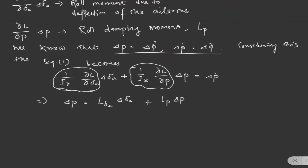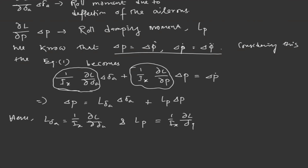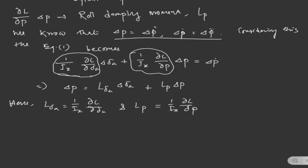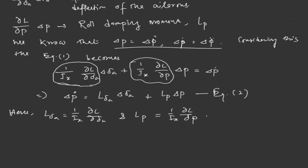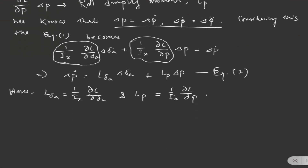This should be dot actually. Here, A_L · delta_A = (1/I_x) · ∂L/∂(delta_A), and L_P = (1/I_x) · ∂L/∂P. These are the stability derivatives. From equation 2, we can write: ΔP_dot − L_P · ΔP = L_delta_A · delta_A.